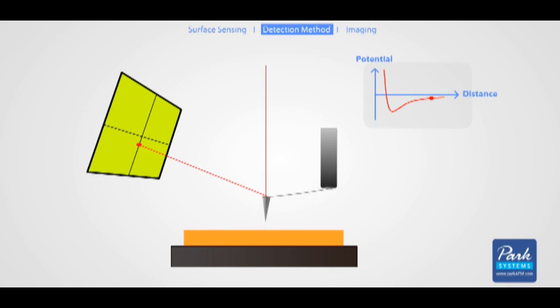Any bending in the cantilever will cause changes in the direction of the reflected beam. The position detector then tracks and records those beam changes.